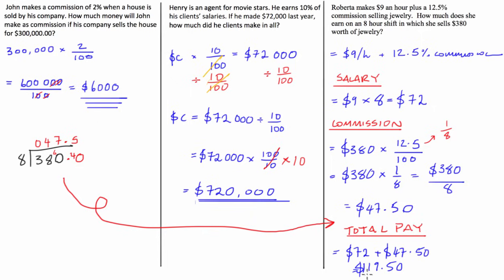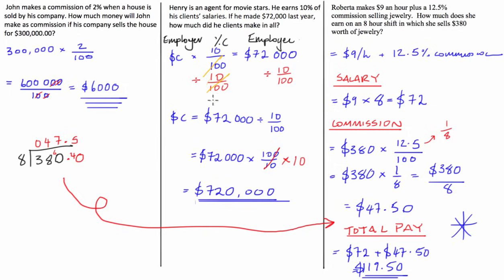This last one was the most complicated, but they all require the same strategy. You set up the equation with the percentage commission: on one side is what the employee receives, and on the other side is what the employer receives from the sales, with the percentage commission in between. If you set up your equation like this, it doesn't matter if you work forwards or backwards — you can just use algebra and fractions to solve them.